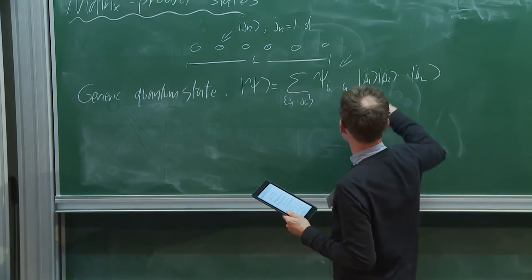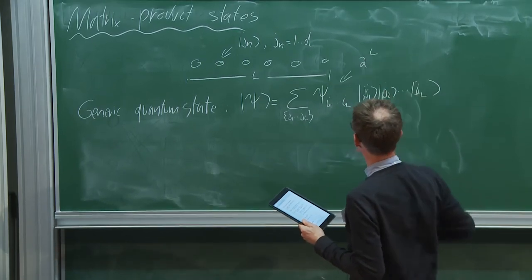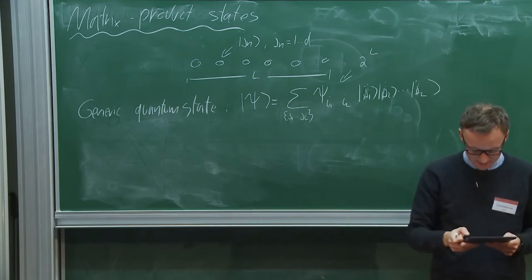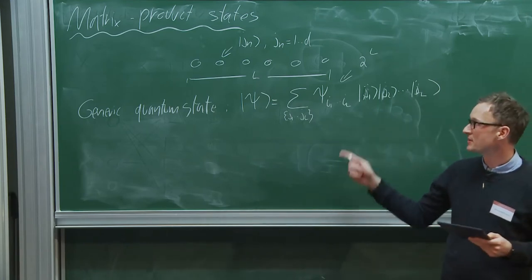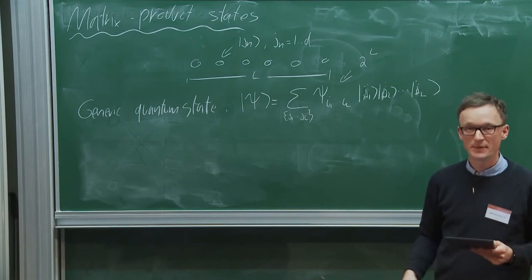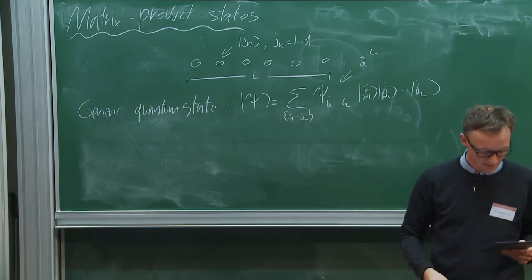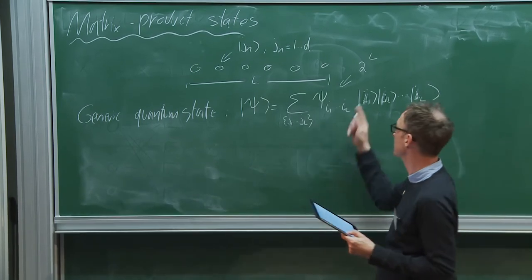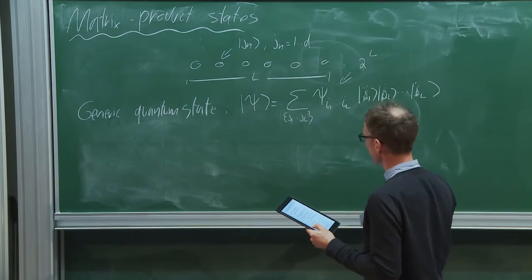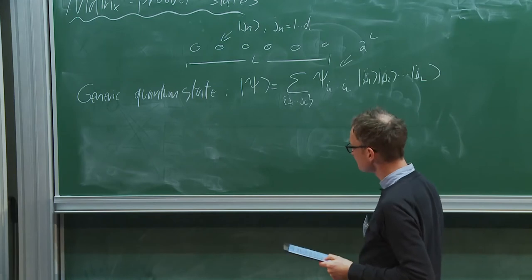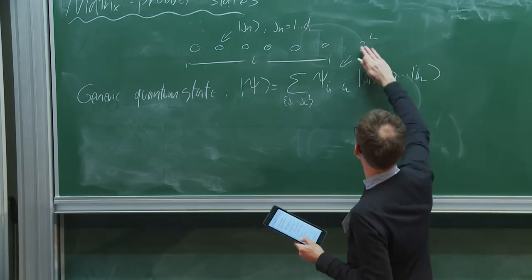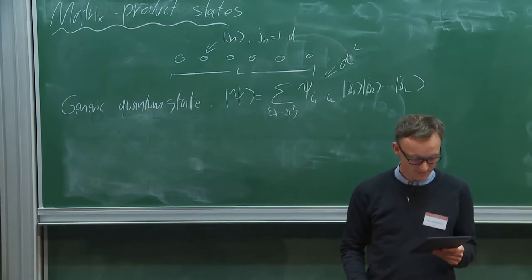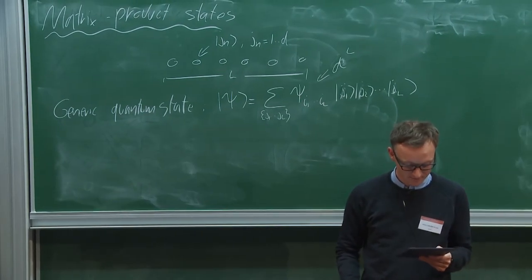However, there are 2^L complex numbers that we need to store, and that makes it incredibly difficult to deal with in this full representation. This is the representation used when using exact diagonalization, where we construct a 2^L × 2^L dimensional matrix. It would be 2 for a spin-1/2 system.